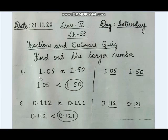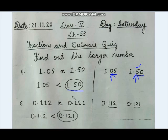In question number 5: 1.05 or 1.50. After the decimal point, the first digit is 0 for 1.05 and 5 for 1.50. Since 5 is greater than 0, 1.50 is the greater decimal number.